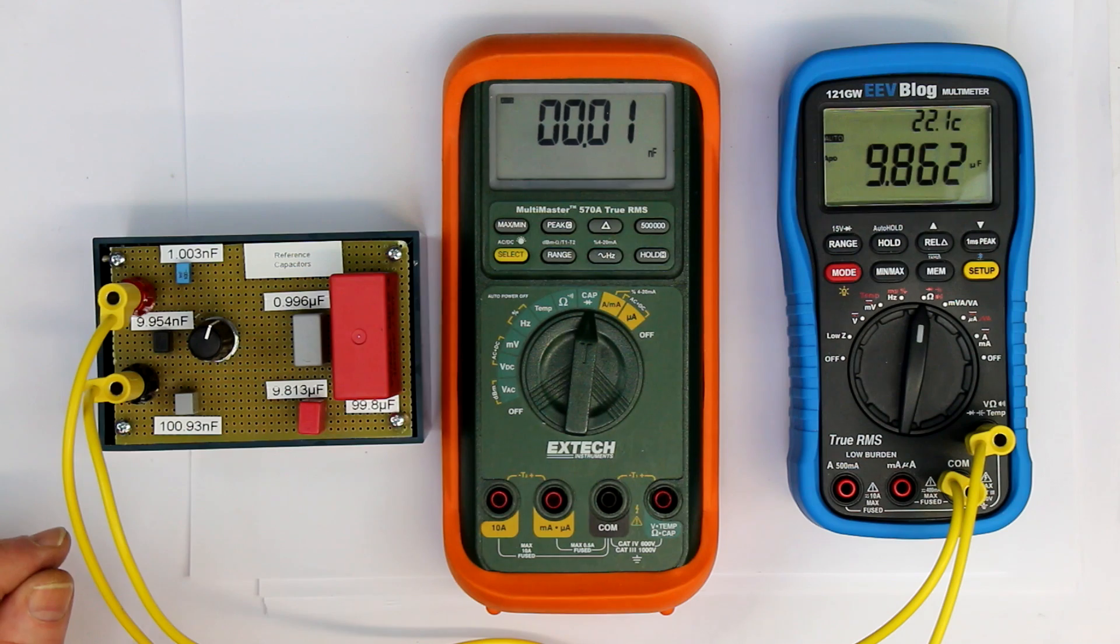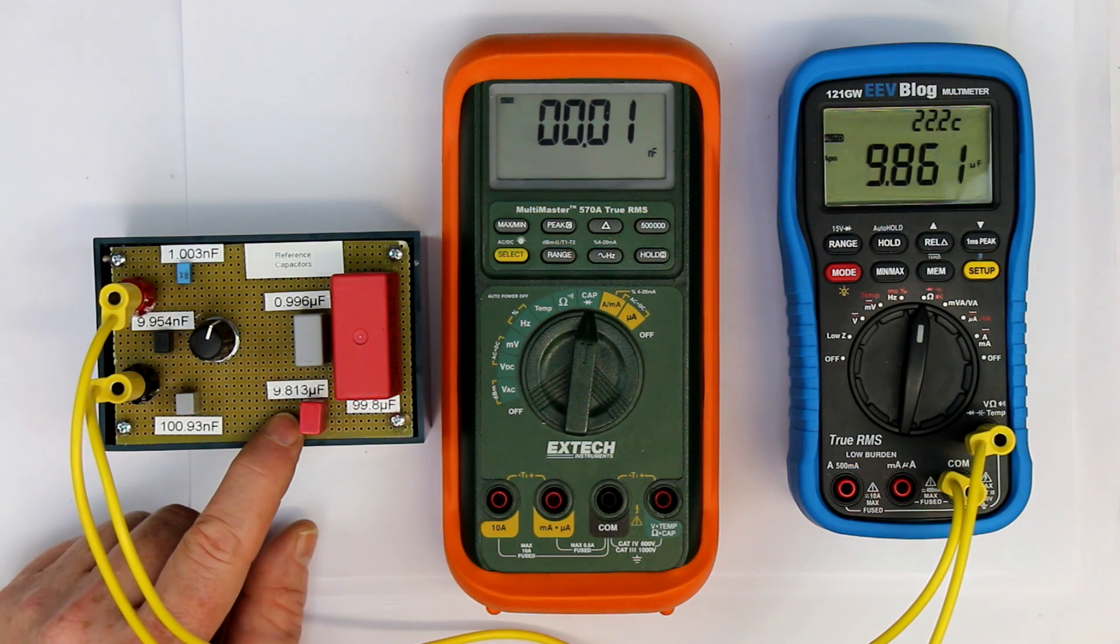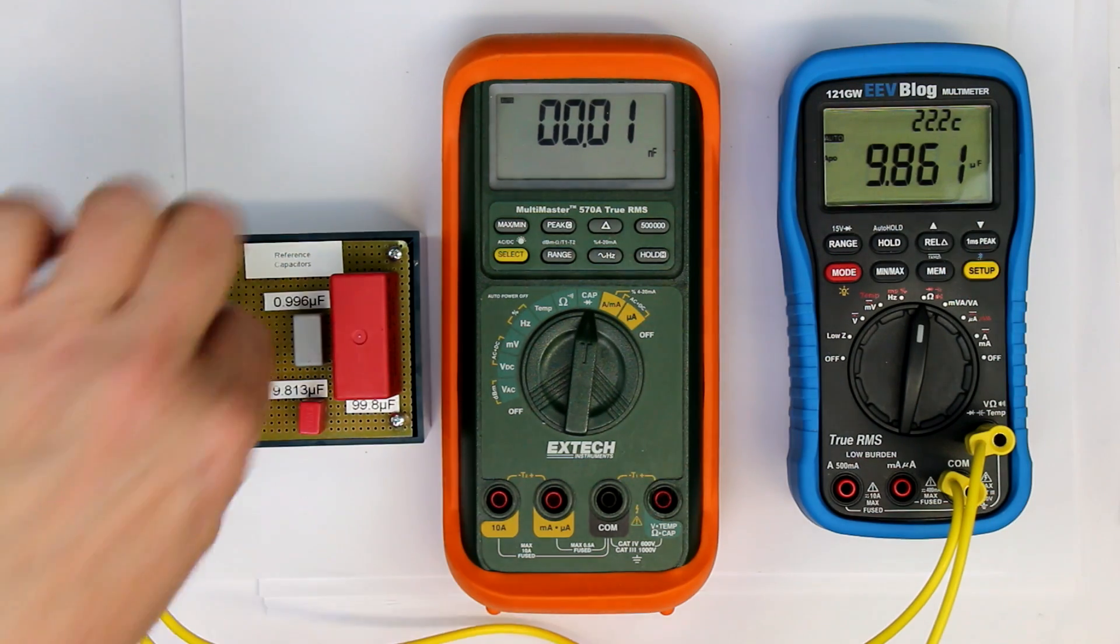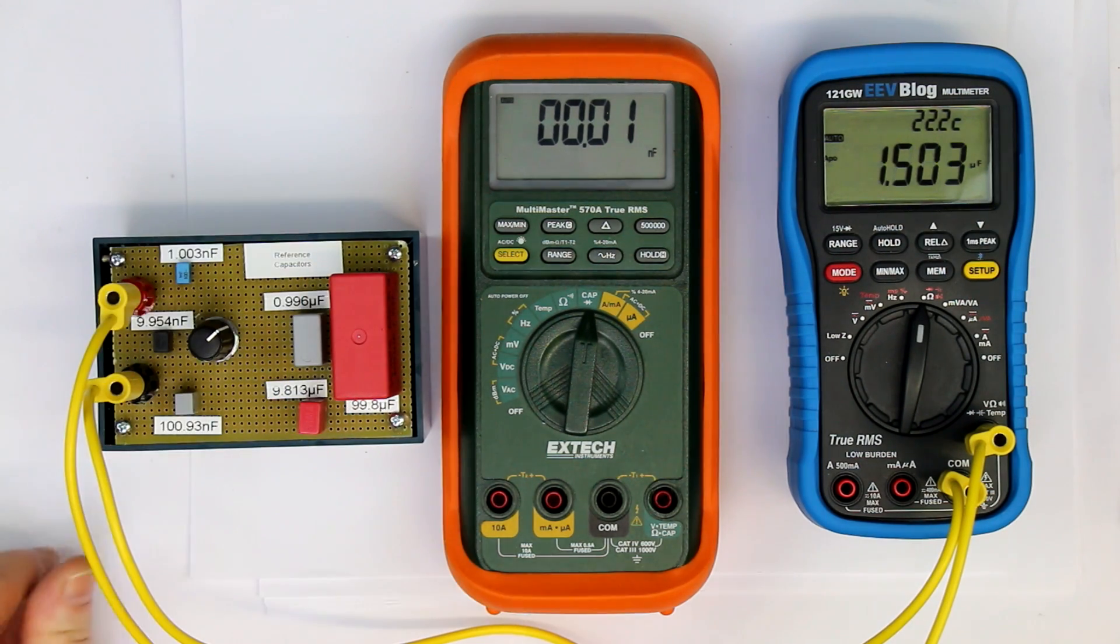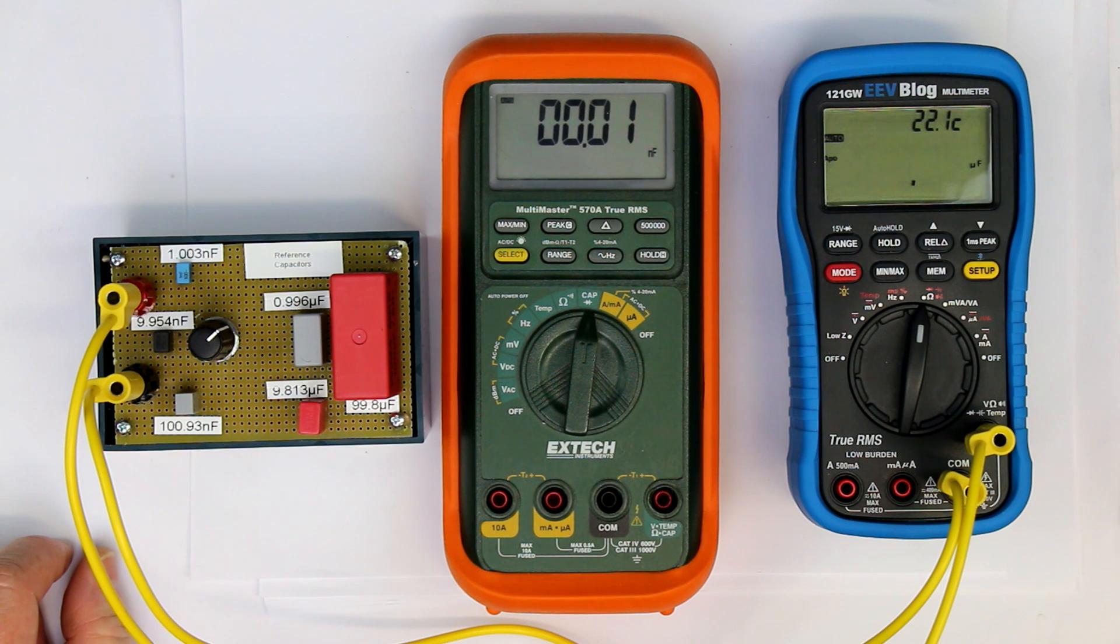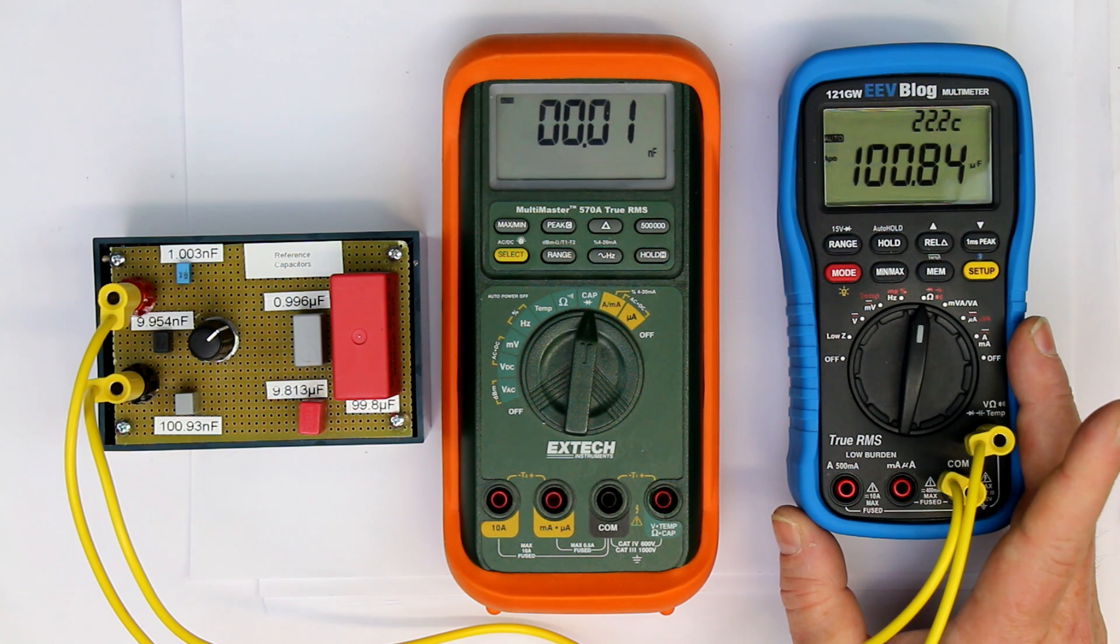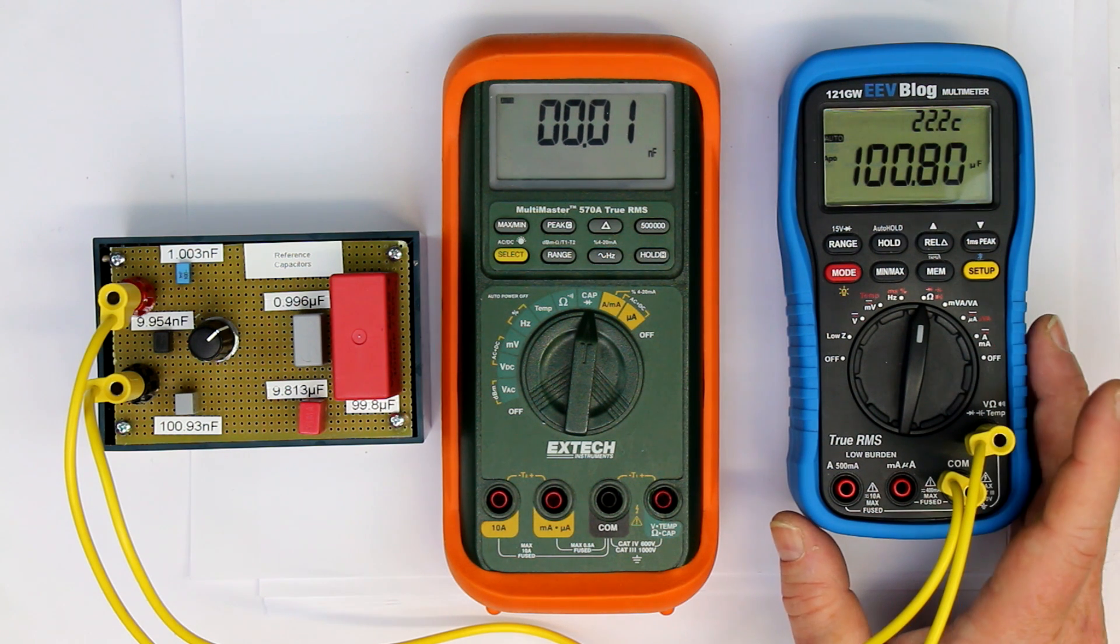And 9.813 gives 9.86, so also better than 1%. And here we are again at nearly exactly 1%. So although the EEVblog states to have only 2.5%, in reality it is better than 1%.